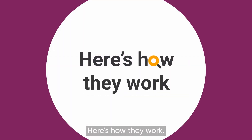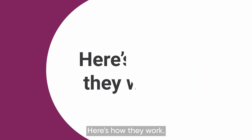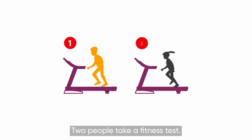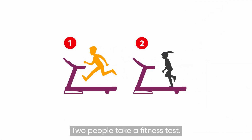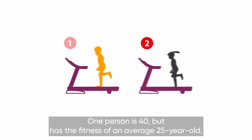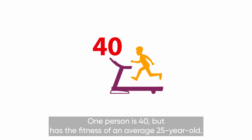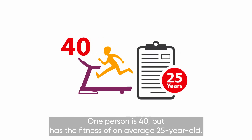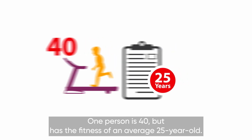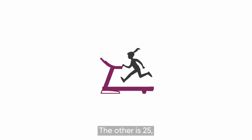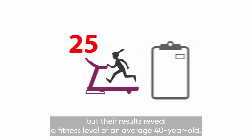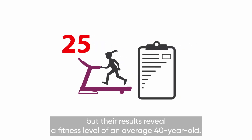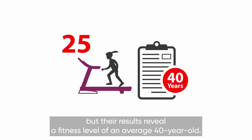Here's how they work. Two people take a fitness test. One person is 40, but has the fitness of an average 25 year old. The other is 25, but their results reveal a fitness level of an average 40 year old.